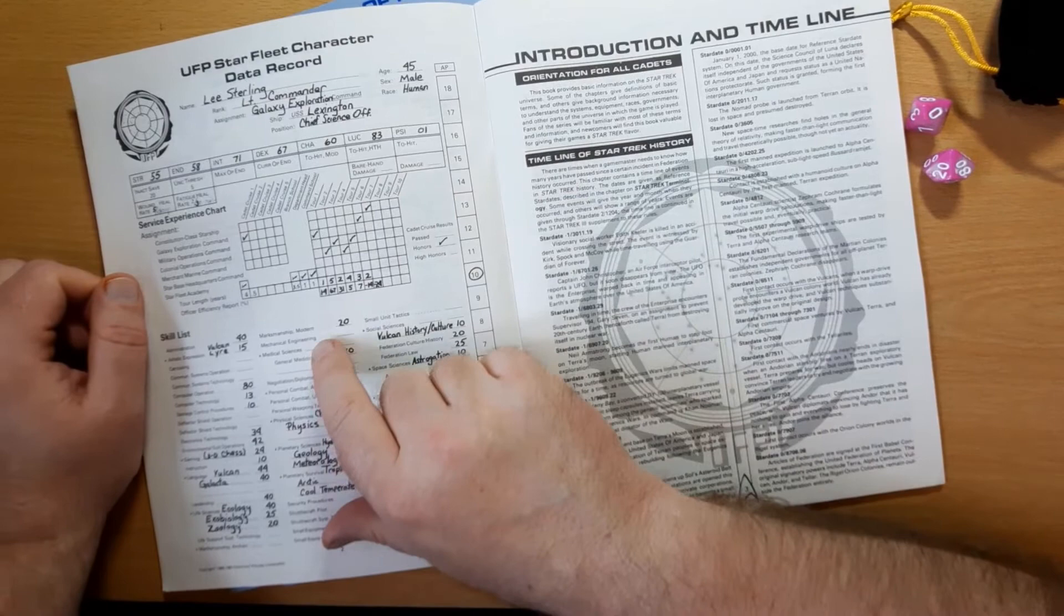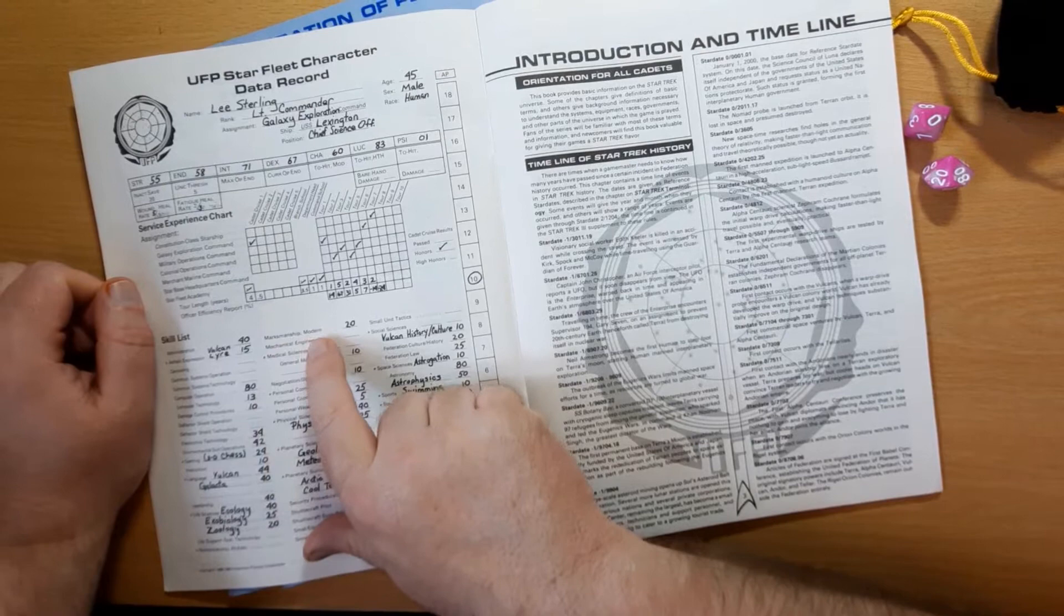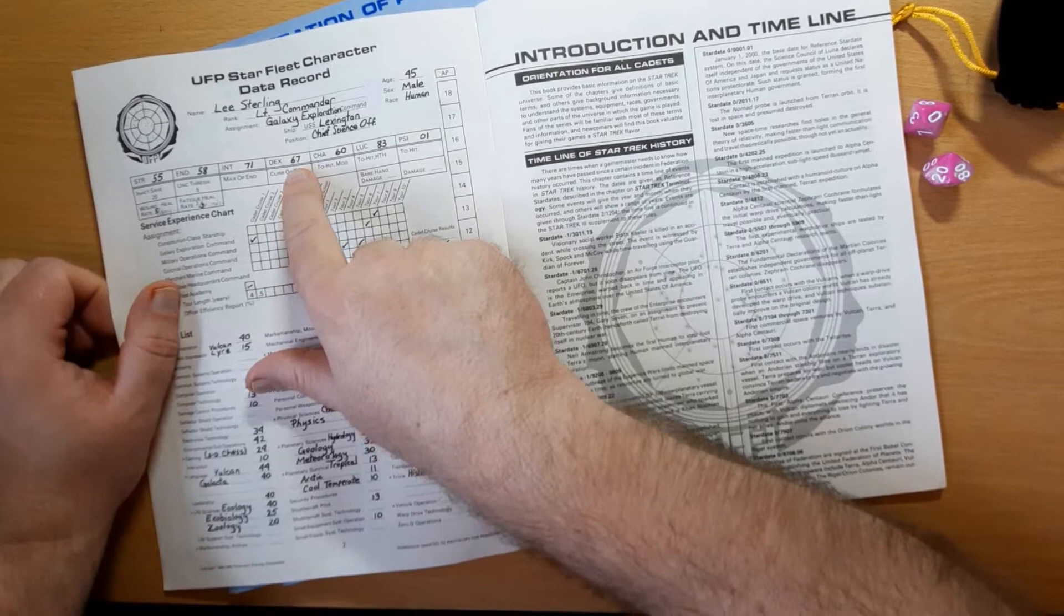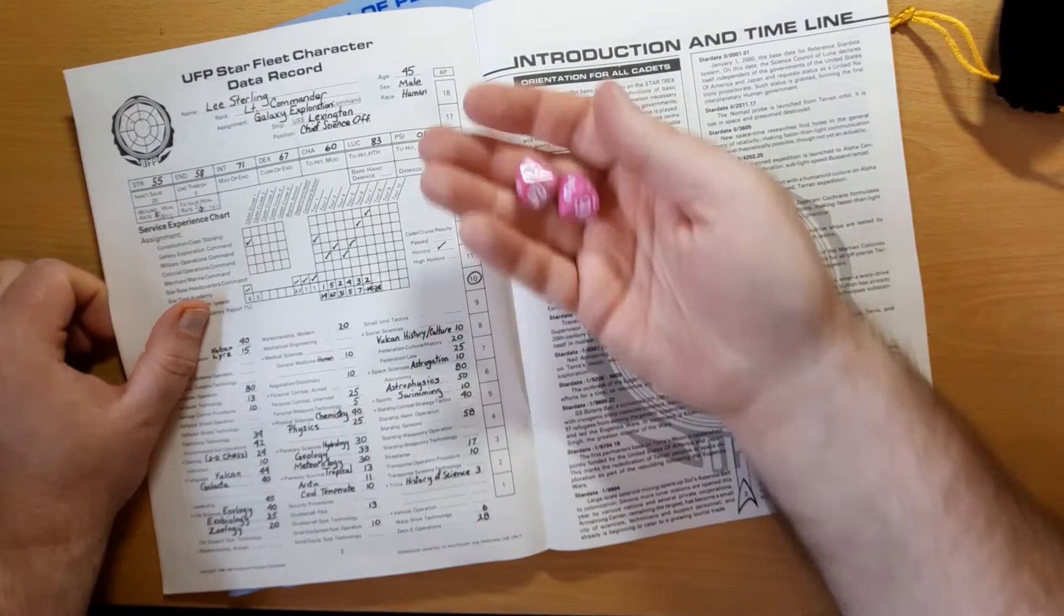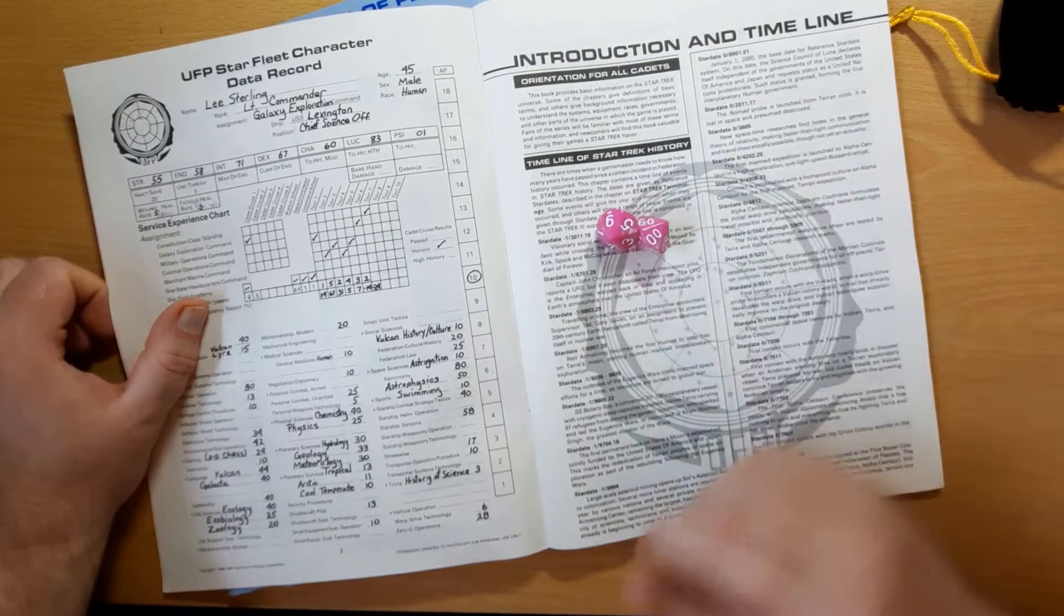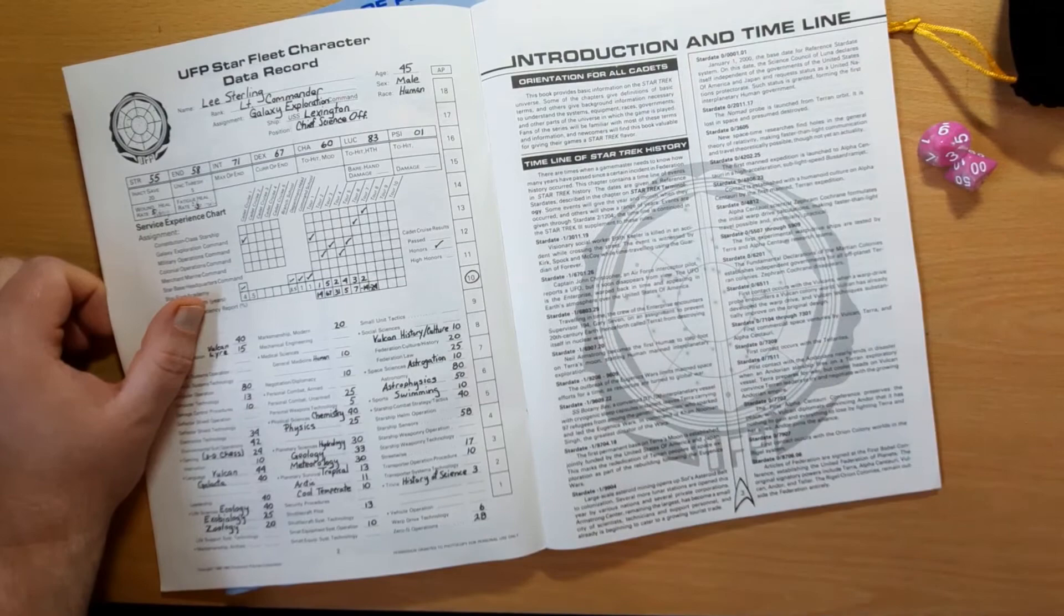Now combat skills work as a combination of your skill and your attribute. So for firing a phaser, you need modern marksmanship. Lee here has it at 20, and he has a dexterity of 67. You add those together and then half it. So he has a total of 87, which half is 43 because you round down. So he has a 43% chance of hitting with his phaser. We roll, he gets 05, and he succeeds.